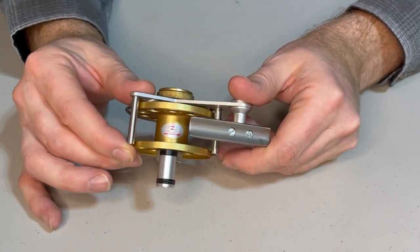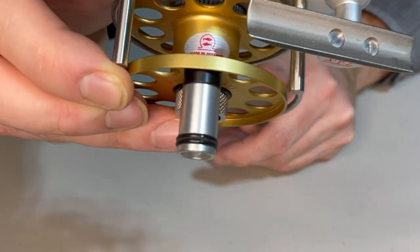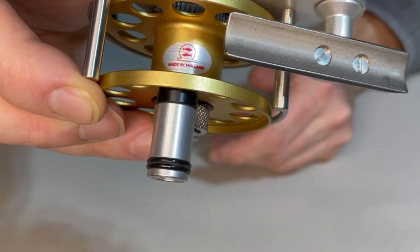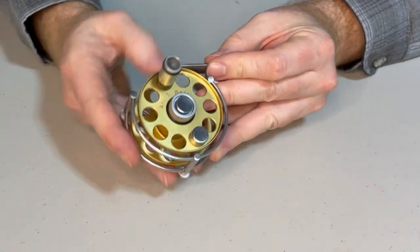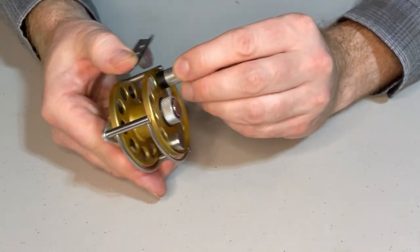Inside of the spool is Made in Holland. If you can see that. It leads me to believe this is one of the Ari Hart Reels that were made by Ari in Holland.